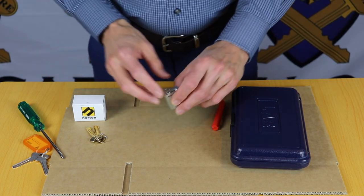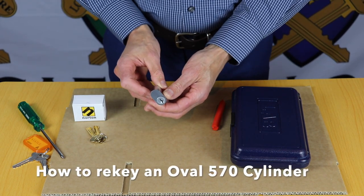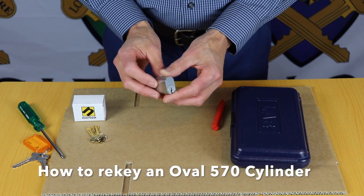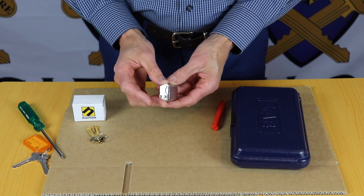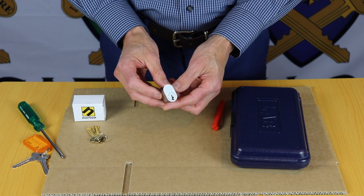Hi, I'm Colin from Locks Galore and today we're going to look at how to rekey a standard 570 oval cylinder. These are Lockwood oval cylinders commonly used on most commercial properties across Australia.